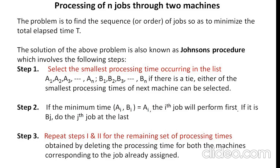Let's see the processing of n jobs through two machines. The problem is to find the sequence of jobs so as to minimize the total elapsed time — that is, determine a sequence of jobs that will minimize the total elapsed time, also finding the idle time for machine A and B. The solution of the above problem can be found by Johnson's procedure.